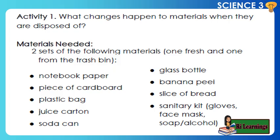Activity 1: What changes happen to materials when they are disposed of? Materials needed — two sets of the following materials, one fresh and one from the trash bin: notebook paper, piece of cardboard, plastic bag, juice carton, soda can, glass bottle, banana peel, and slice of bread.